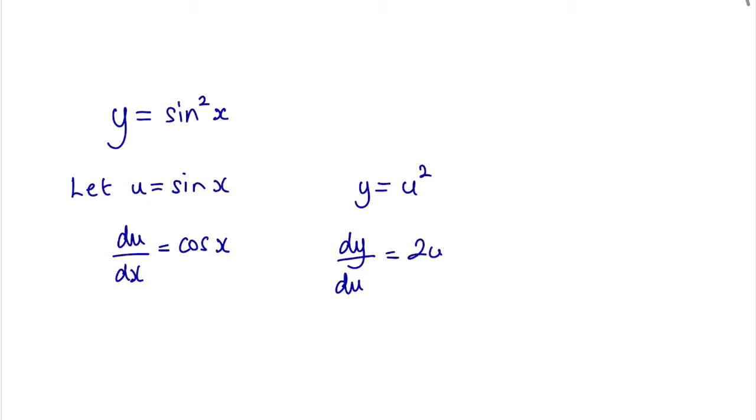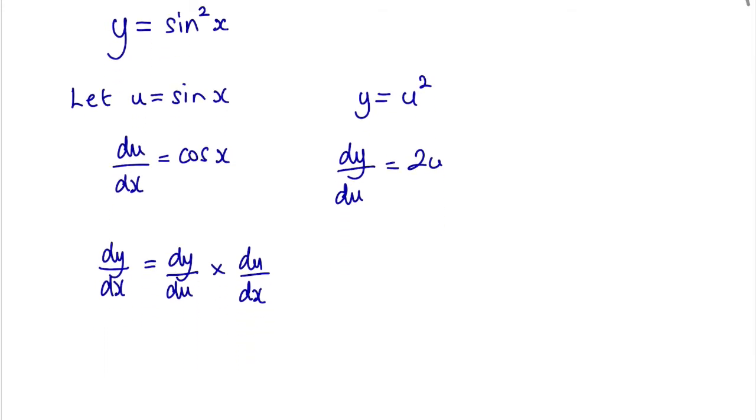So now we apply the chain rule and what we've got is that dy by dx is equal to dy by du multiplied by du by dx that's equal to well dy by du is 2u and we're going to multiply that by du by dx which is cosine x.